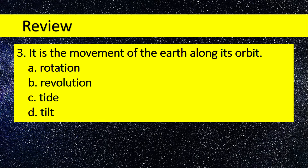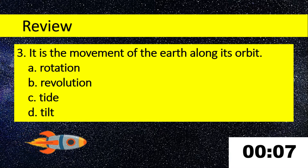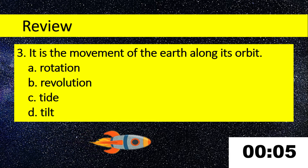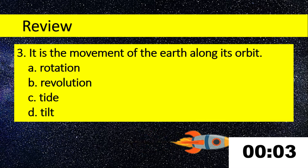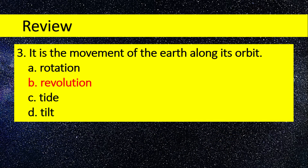Number 3. It is the movement of the Earth along its orbit. A. Rotation, B. Revolution, C. Tide, D. Tilt. Answer: Revolution.